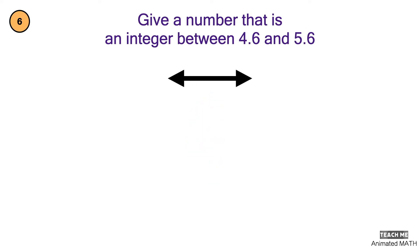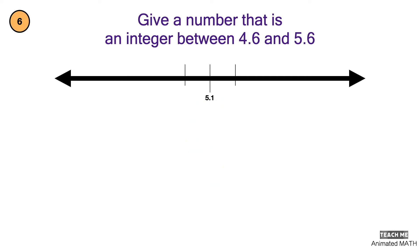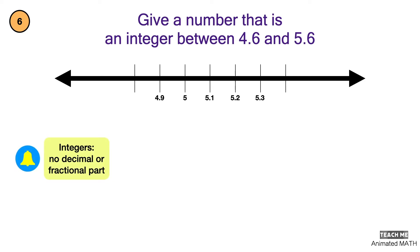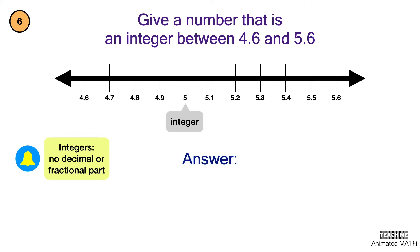Integers are numbers without a decimal or a fractional part. In this interval, there is only one integer. The answer is 5.